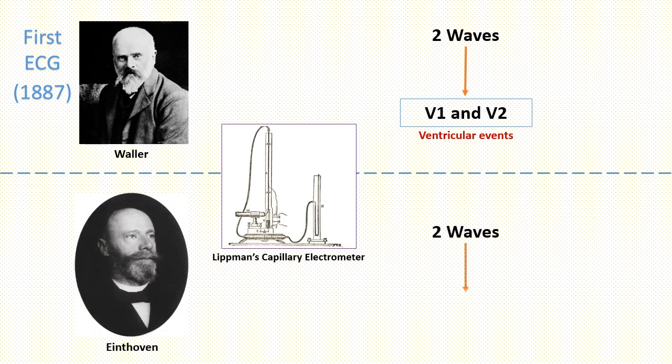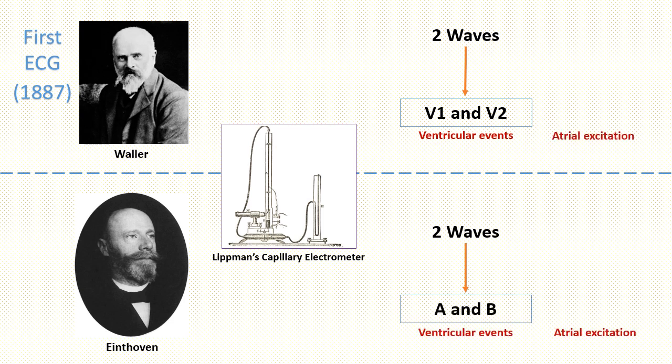Eindhoven also obtained tracings with two waves made by ventricles and he labeled them A and B. Later, a wave for atrial excitation was recorded with an improved Lippmann's electrometer. Waller labeled the newly discovered deflection with an A to indicate its atrial origin. But Eindhoven had already used A to label the first ventricular event, so he used the letter P to designate the record made by the electrical activity produced by the atria.